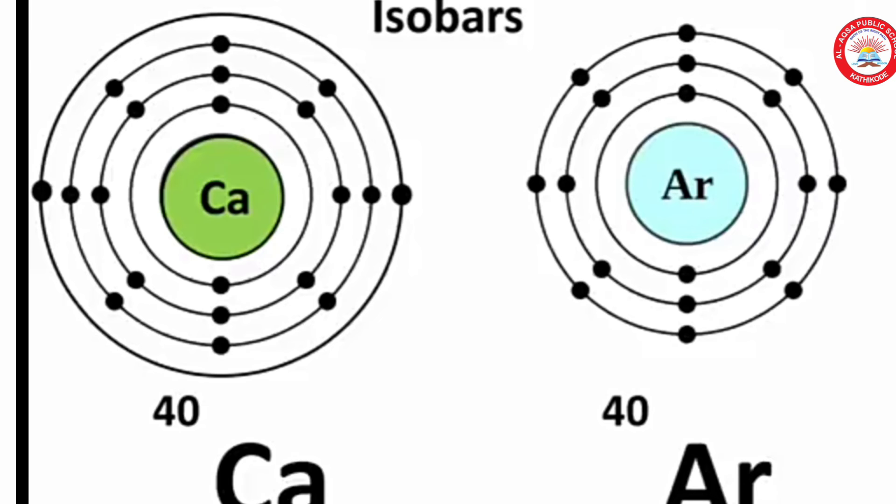Let us consider two elements. First one calcium with atomic number 20 and the second one argon with atomic number 18. The number of electrons in these atoms is different, that is 20 and 18, but the mass number of both these elements is 40. That is, the total number of nucleons is the same in the atoms of this pair of elements.